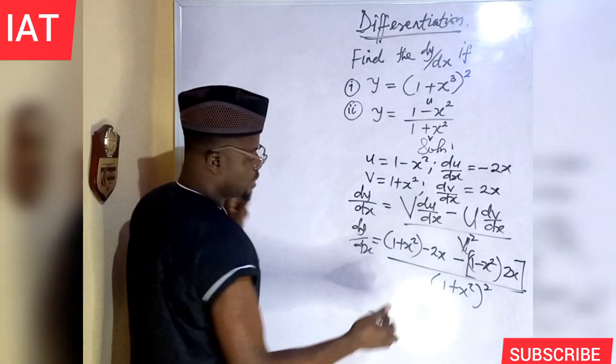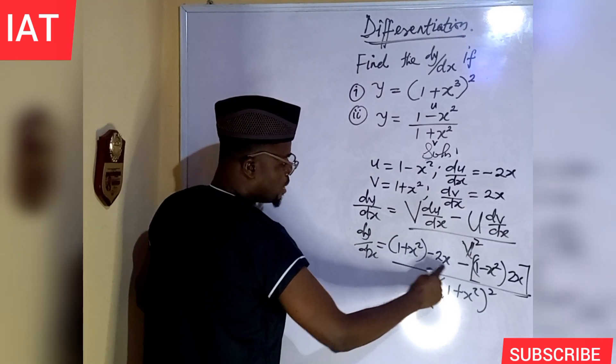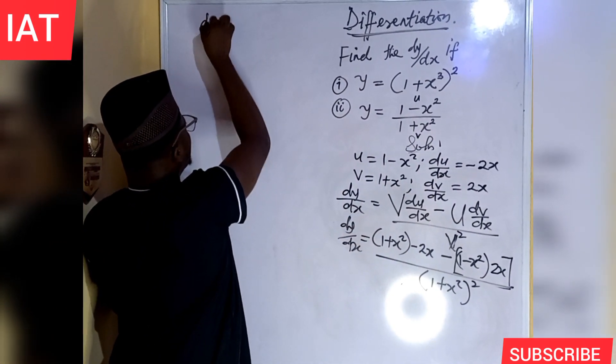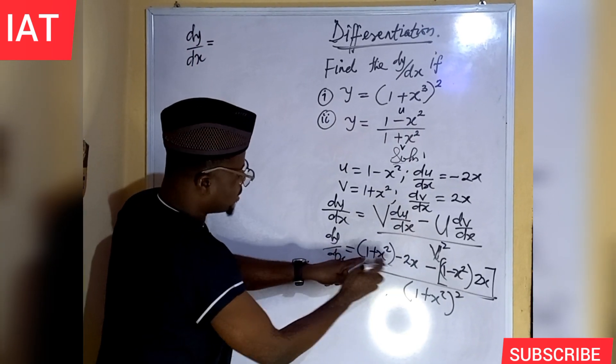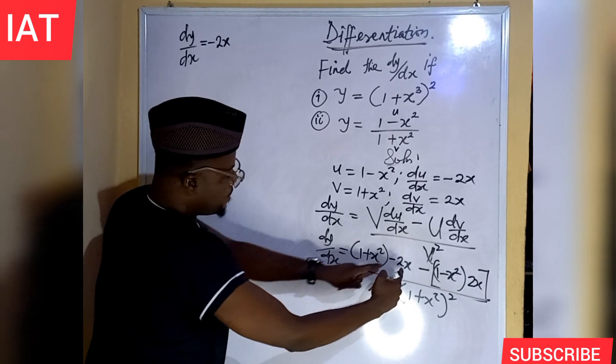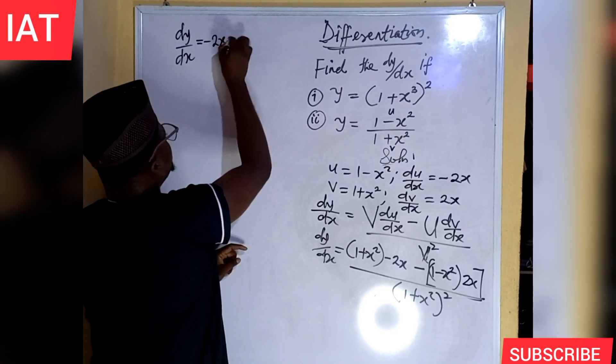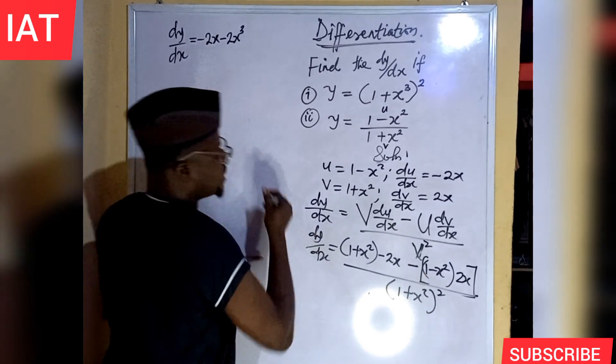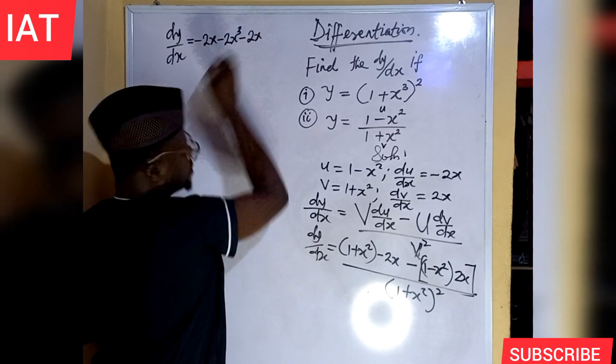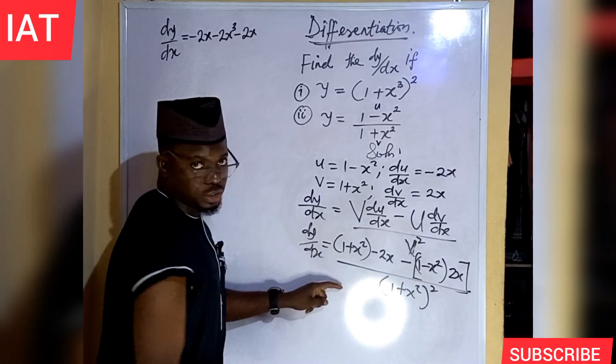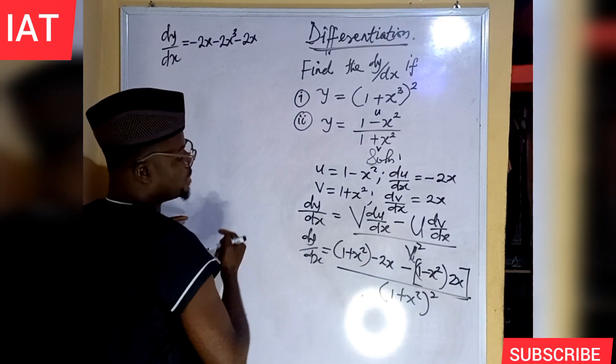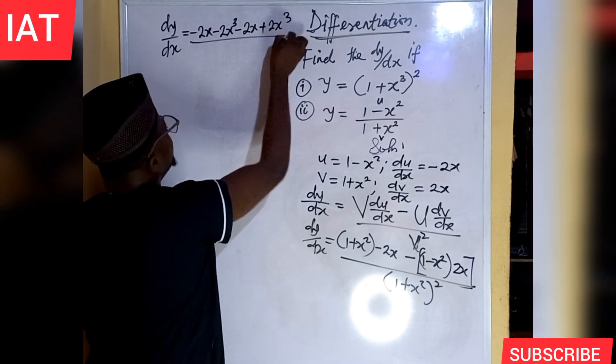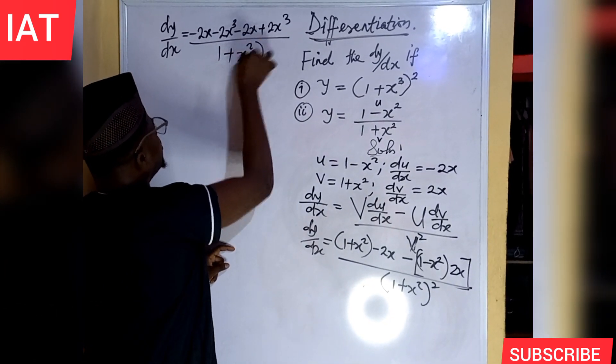Let's take it up. So, at this point, if we clear the bracket, you observe that minus 2x will multiply by 1 and minus 2x will also multiply by x squared. And if minus 2x multiplied by 1, we will have that dy over dx equal to minus 2x multiplied by 1 will give us minus 2x. Again, minus 2x multiplied by plus x squared will give us minus 2x raised to the power of 3. On this part, 2x times 1 will give us minus 2x. Again, minus will affect this minus to be plus. And 2x times x squared will give us plus 2x cubed all over. So, here, what we have at the denominator is 1 plus x squared raised to the power of 2.